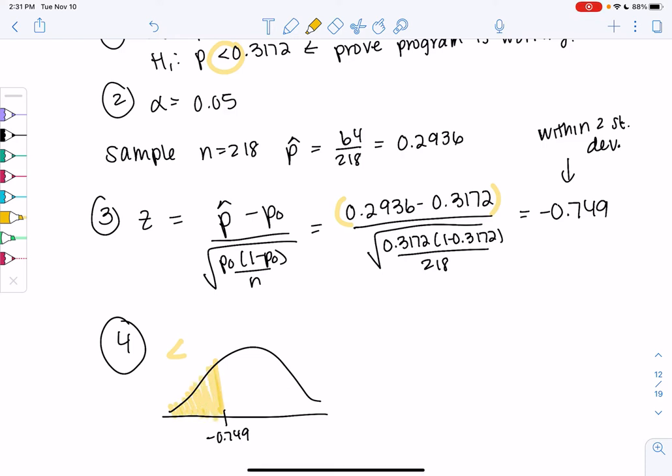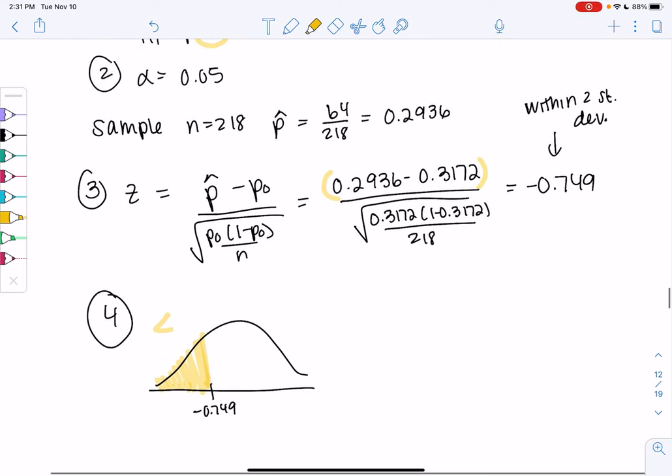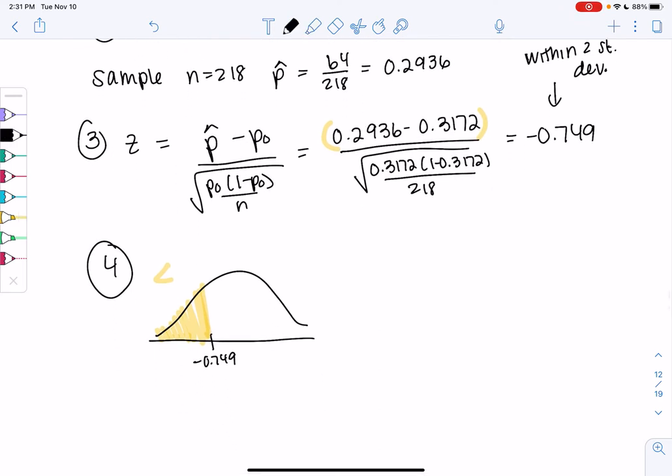So we're going to find the area. We're not doubling, because it's not two-tailed, we're just going to find a single area. Since we're on the left side, we have negative infinity as my lower, so P-value is normal CDF, negative infinity or negative 10 to the 99, up to negative 0.749.